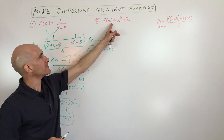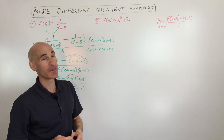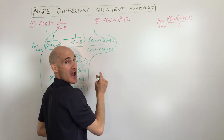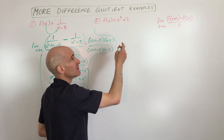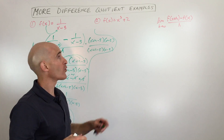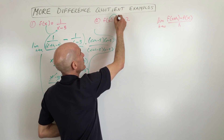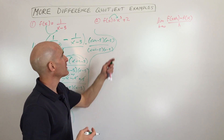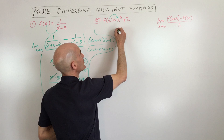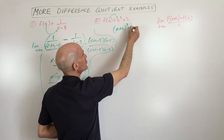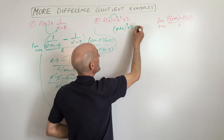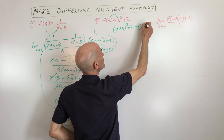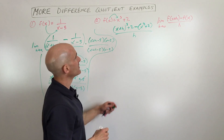Let's look at another example: f of x equals x cubed plus 2. We're going to go through that same exact process. We're going to substitute (x plus h) in for x. If there were another x in the expression, we would also put (x plus h) in for that x as well — whatever is inside the parenthesis goes in for x on the right side. So I'm going to replace x with (x plus h), giving us (x plus h) cubed plus 2, minus f of x — the original function — minus (x cubed plus 2), all divided by h. And it's the limit as h is approaching 0.